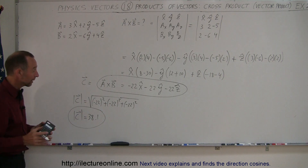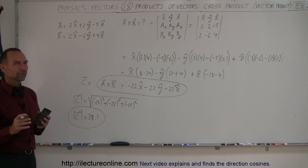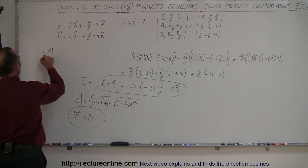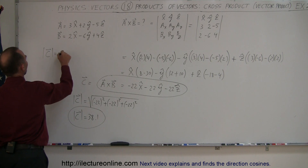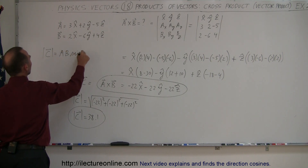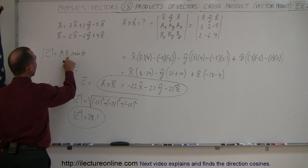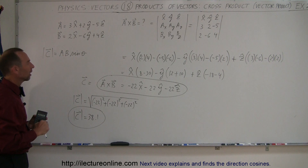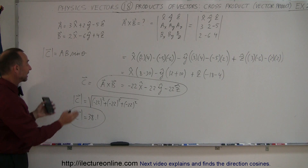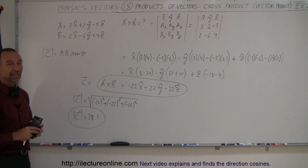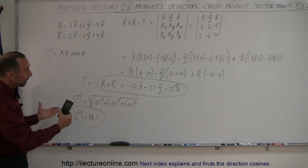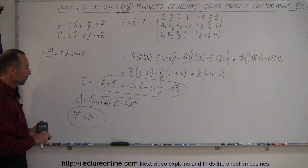And that's how we find the cross product and the magnitude. We could have also found the magnitude using the formula: the magnitude of C equals the magnitude of A times the magnitude of B times the sine of the angle between them — but that would require calculating each magnitude separately and finding the angle using the dot product method. It's easier to just compute it directly at the end like this. Anyway, that's a good example of how to find the cross product of two vectors that each have X, Y, and Z components.